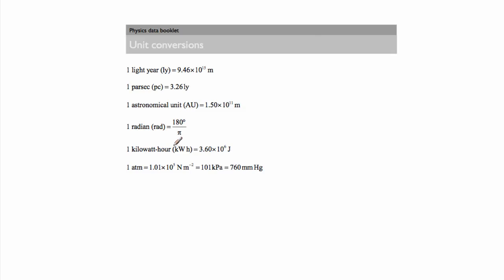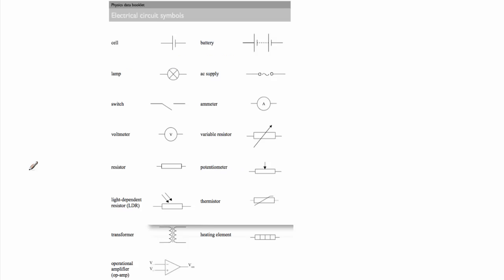Kilowatt hour - kilowatt is a unit of power and hour is a unit of time. This is often used, for example electricity bills are usually given in kilowatt hours, so it tells you how many joules that is, how much energy you've used. Atmosphere tells you how many newtons per meter squared or kilopascals or millimeters of mercury. This is used in topic 3 under thermal physics. I'm just going through quickly a few of the basics before we get to the real stuff.